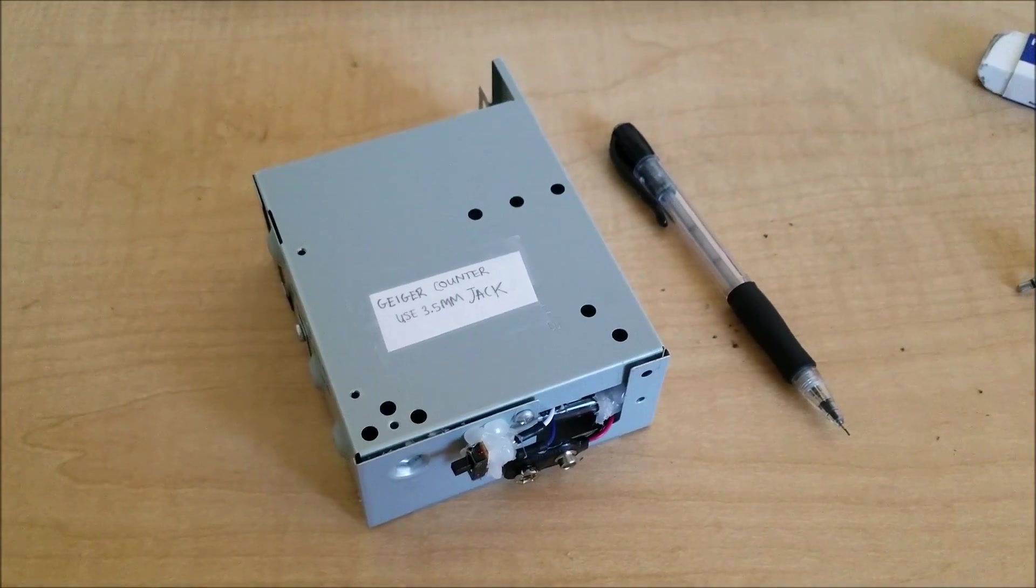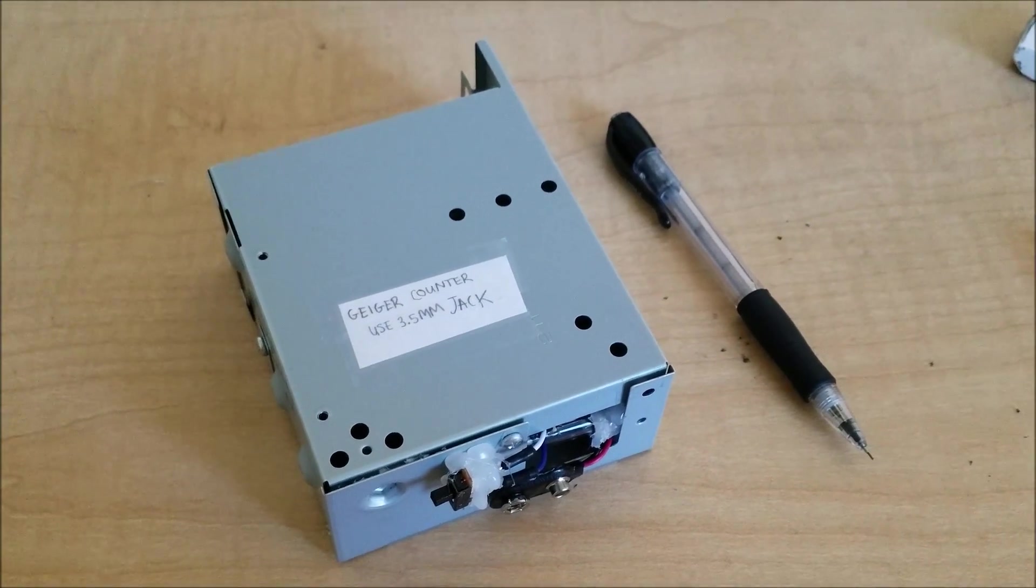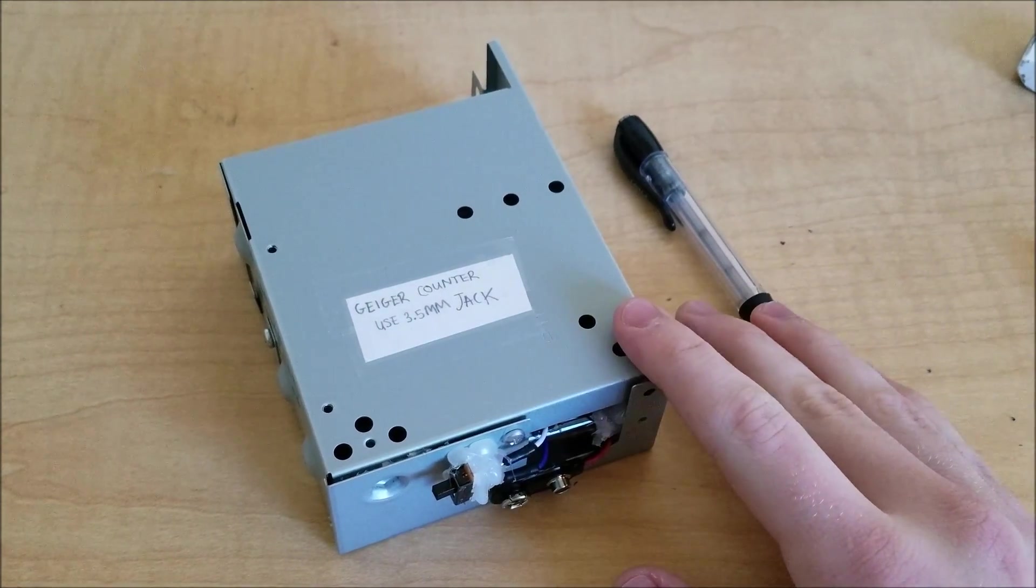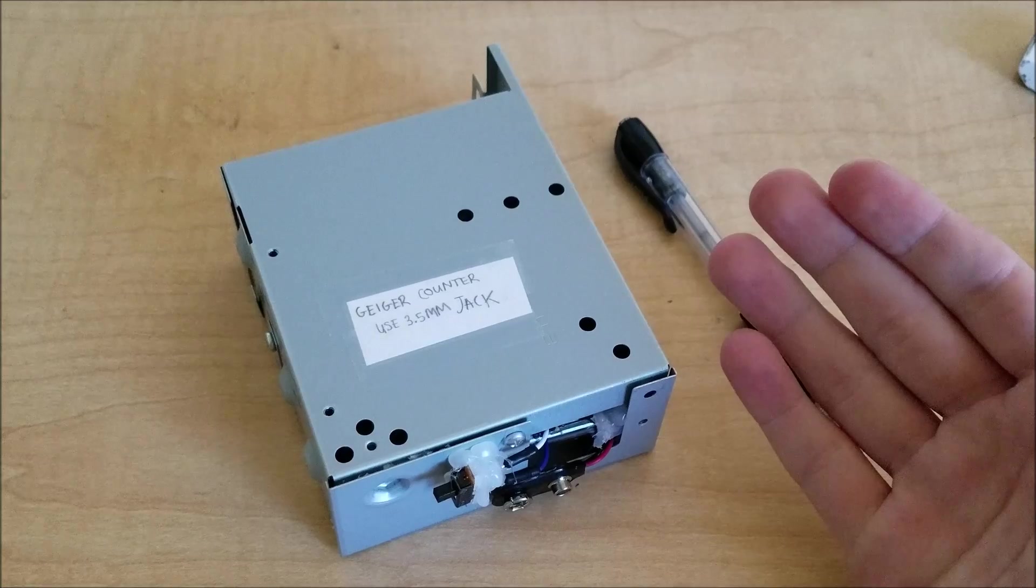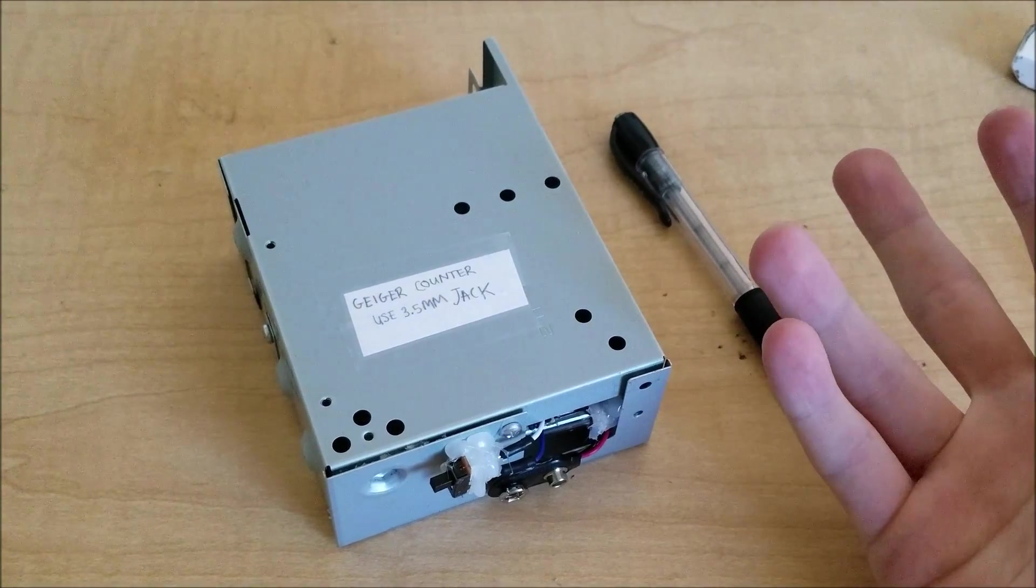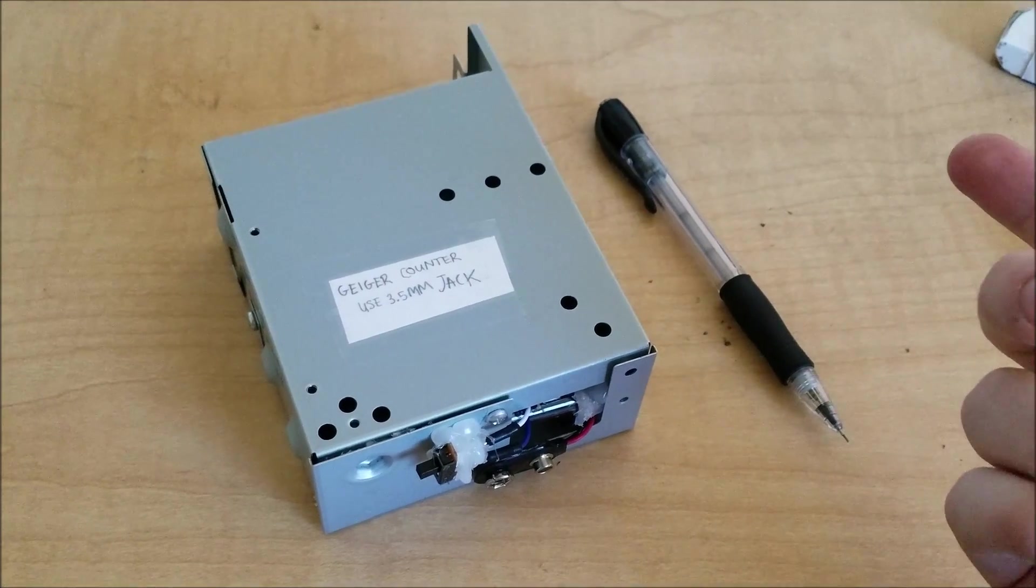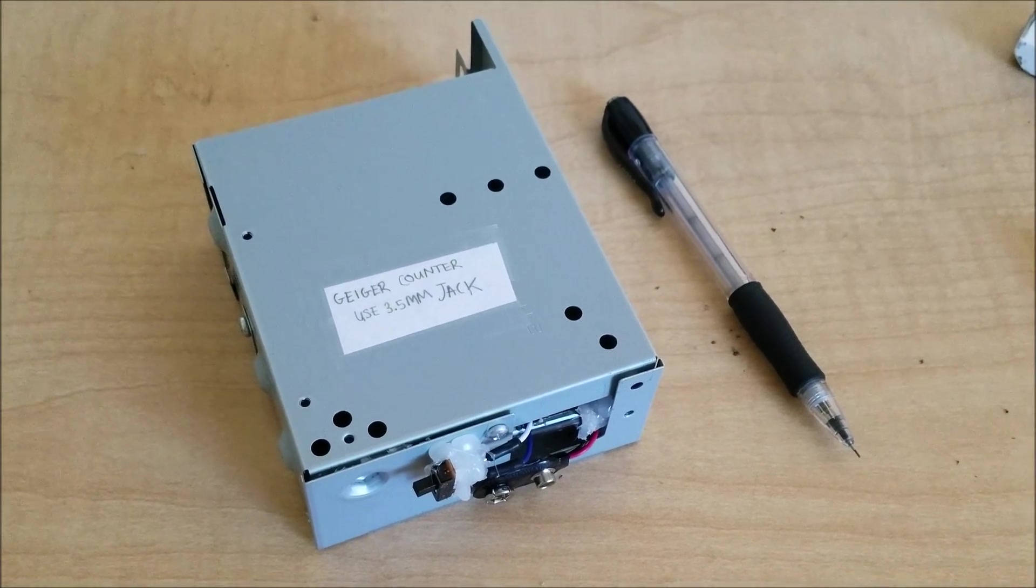So I wanted to share with you the latest project which I actually have completed, and that is a Geiger counter. So I bought a surplus Geiger tube on eBay for pretty cheap. It was built in the Soviet Union, and now they're being sold out of Ukraine. It was about five bucks.